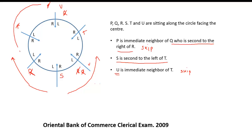So three places are left. We will place Q, R and P here. If you take R here, then going two places to the right gives Q. This is R. This is Q. And P will be here because P is the immediate neighbor of Q. Since Q is here, P will be here. U is left here. So the positions are fixed: S here, U here, T here, R here, P here and Q here.